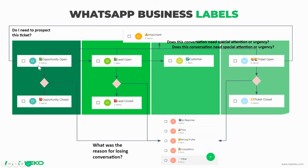You're going to have here the four stages again, with each of the opportunity, lead, customer, and ticket. The arrows show you how your users will move along your funnel.